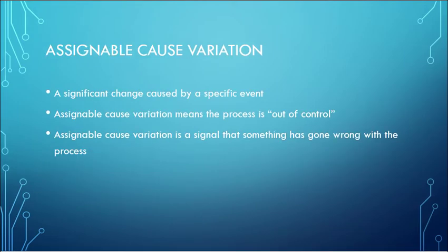The second kind of variation is assignable cause variation, and this is when a significant event has caused a significant change in the data. So assignable cause variation means the process is out of control. It means that things are not always behaving regularly.